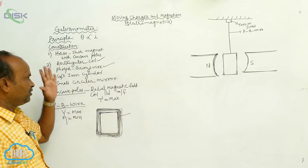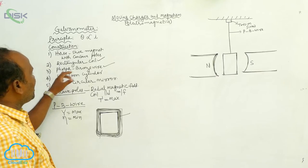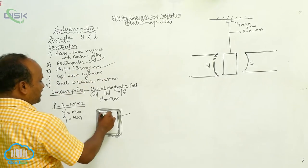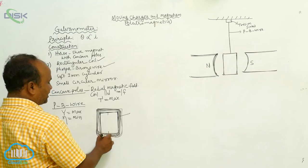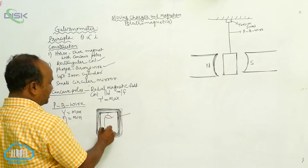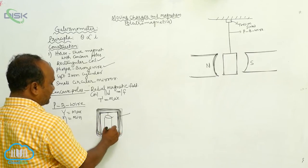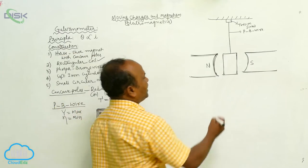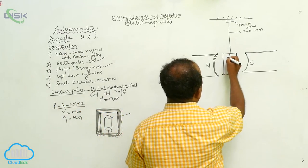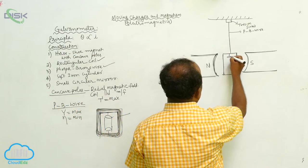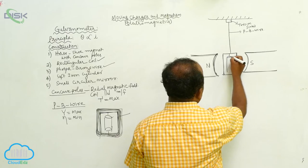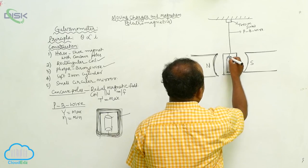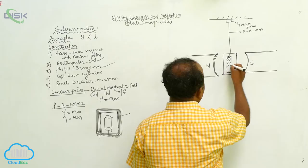Next, the soft iron cylinder. This soft iron cylinder is placed inside the coil. The soft iron cylinder is placed inside the rectangular coil.